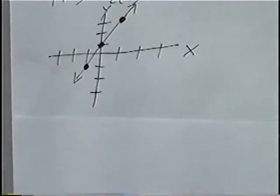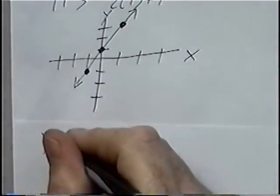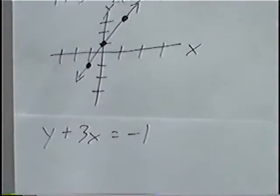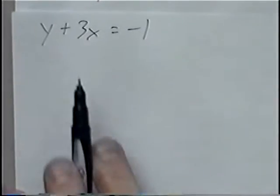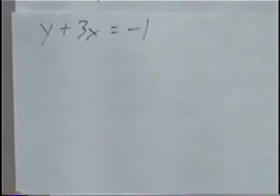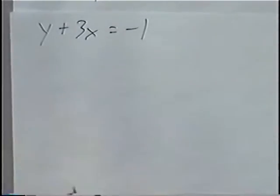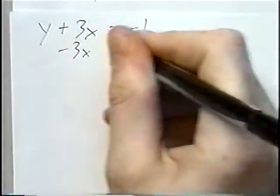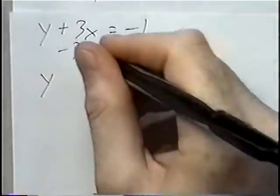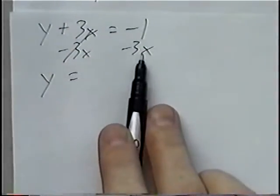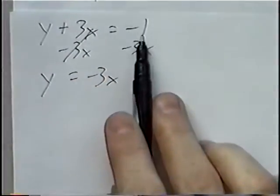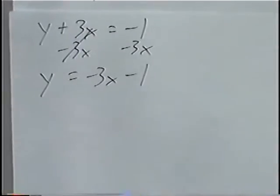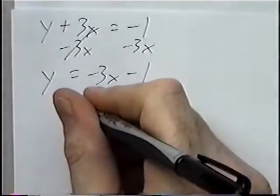The second equation is y plus 3x equals negative one. This time the equation is not in y equals form — we have x and y on the same side. To graph using a t-table, it's best to get y by itself. Since we have a positive 3x, we subtract 3x from both sides, so y equals negative 3x minus one.